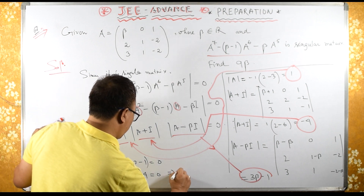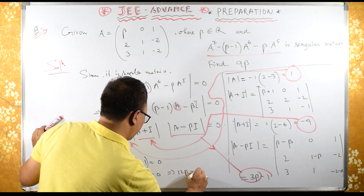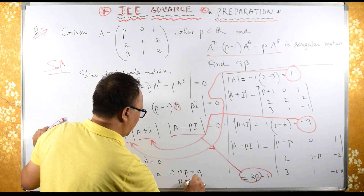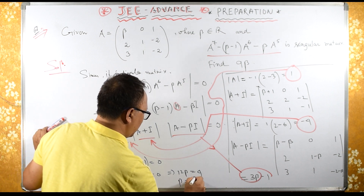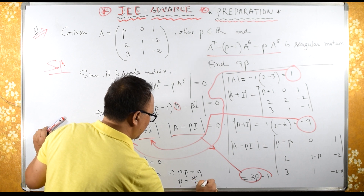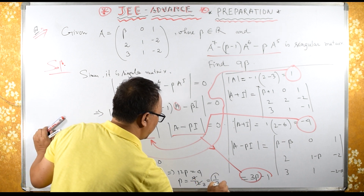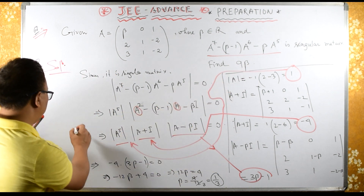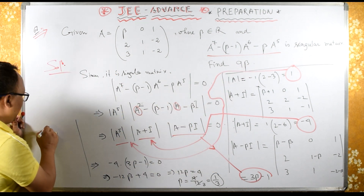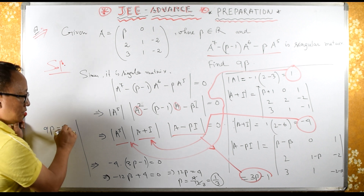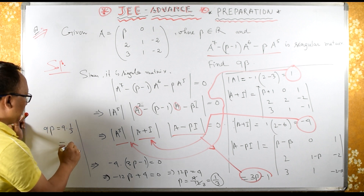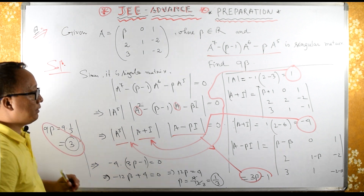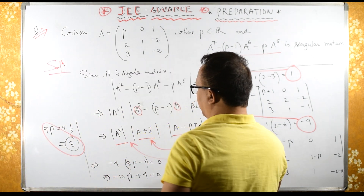Therefore 12 beta equals 4, so beta equals 4 upon 12, which is 1 by 3. If they are asking for 9 beta, then 9 beta equals 9 times 1 by 3, which equals 3. Therefore 9 beta equals 3.